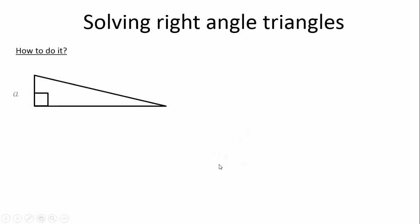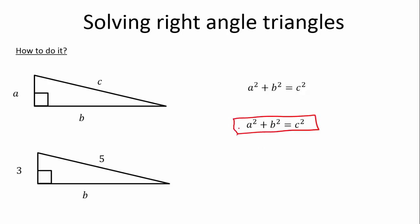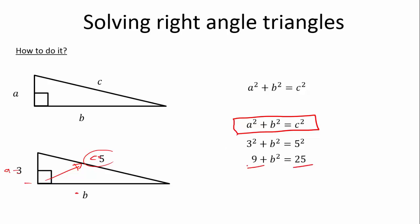Now we take our triangle with A, B, C. We know that A squared plus B squared equals C squared. We have a 3, we have a B, and we have a 5. So again, we go A squared plus B squared equals C squared. That is now 3 squared plus B squared is equal to 5 squared. Remember C is equal to 5, and A is 3 — A and B don't matter, but C has to be opposite the right angle. So 3 squared is 9, 5 squared is 25. So 9 plus something is 25 — that means 9 plus 16 is 25, which is the same as 25 minus 9. So B squared is 16. The square root of 16 is simply equal to 4.